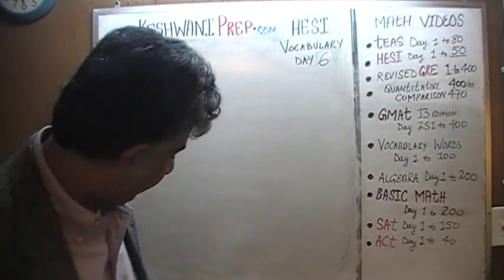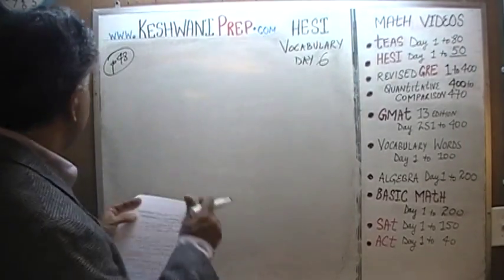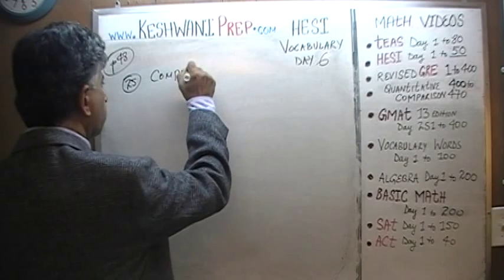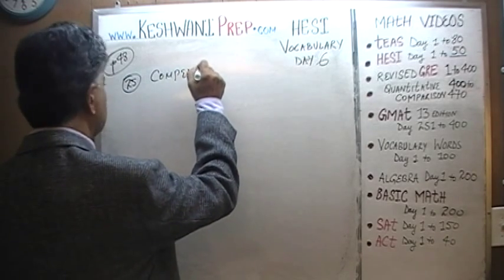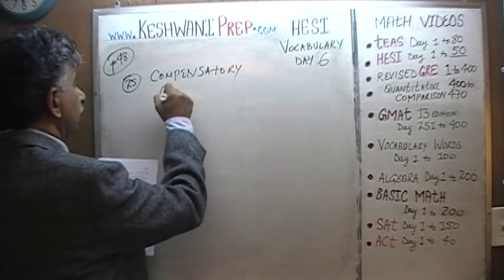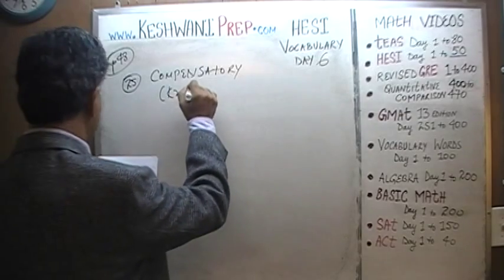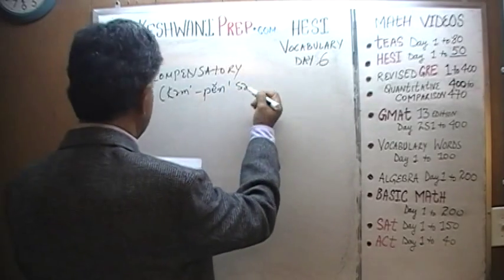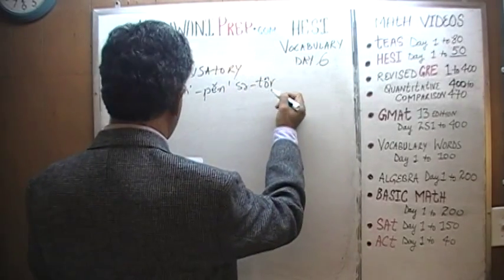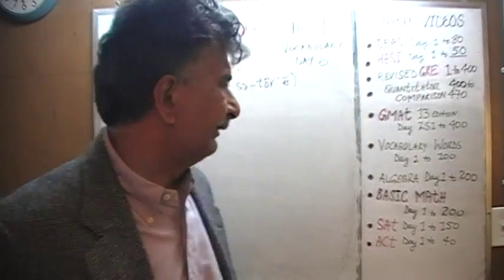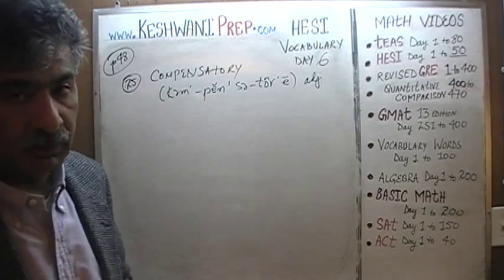Let's pick up from where we left off. Today is our lesson number 6. The very first word we are going to learn today is: compensatory. How do we pronounce it? Com-pen-sa-tory. Compensatory. Compensatory is an adjective, and it obviously comes from the word compensate.